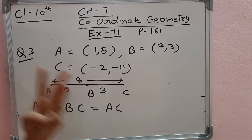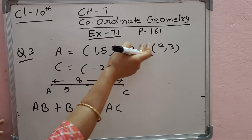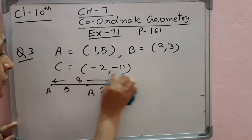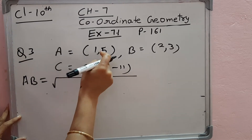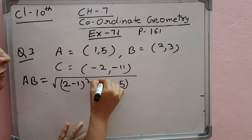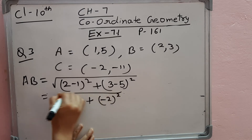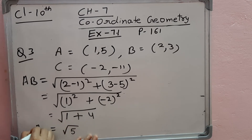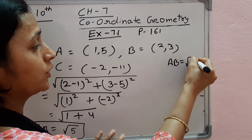So for question number 3, we will find 3 distances: AB, BC, and AC by the distance formula. First of all, AB. Using distance formula with X1, Y1 as (1,5) and X2, Y2 as (2,3): (2 minus 1) squared plus (3 minus 5) squared. 2 minus 1 is 1, so 1 squared, plus 3 minus 5 is minus 2, so minus 2 squared. 1 squared is 1 and minus 2 squared is 4, so square root of 5. AB is equal to root 5 units.